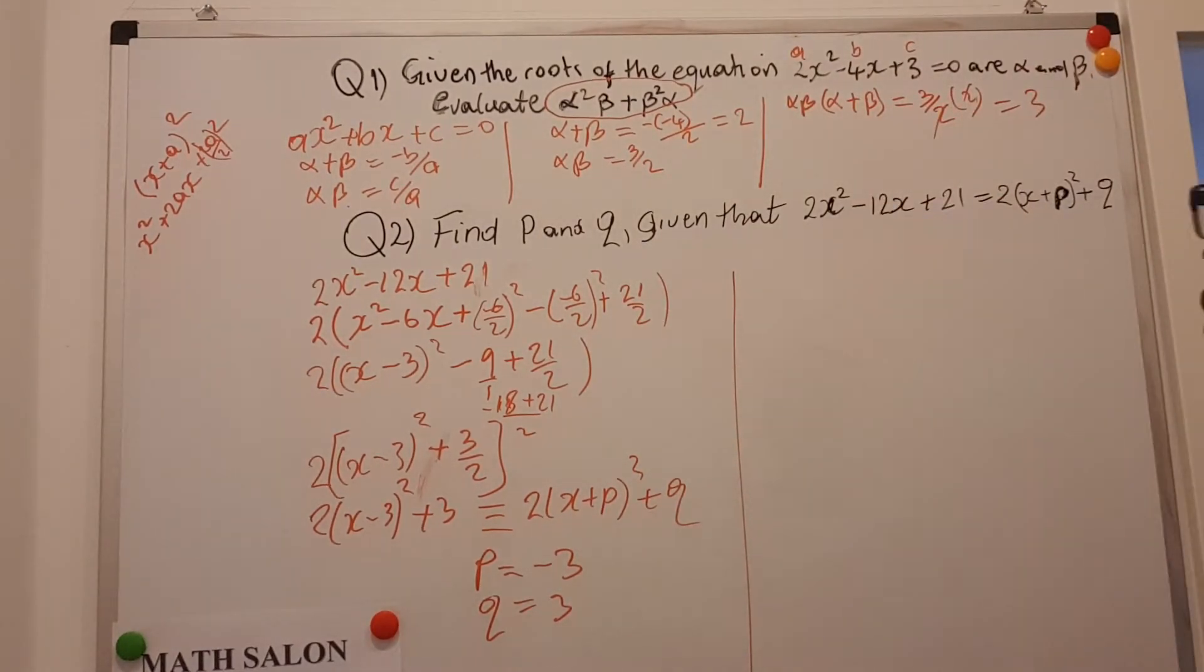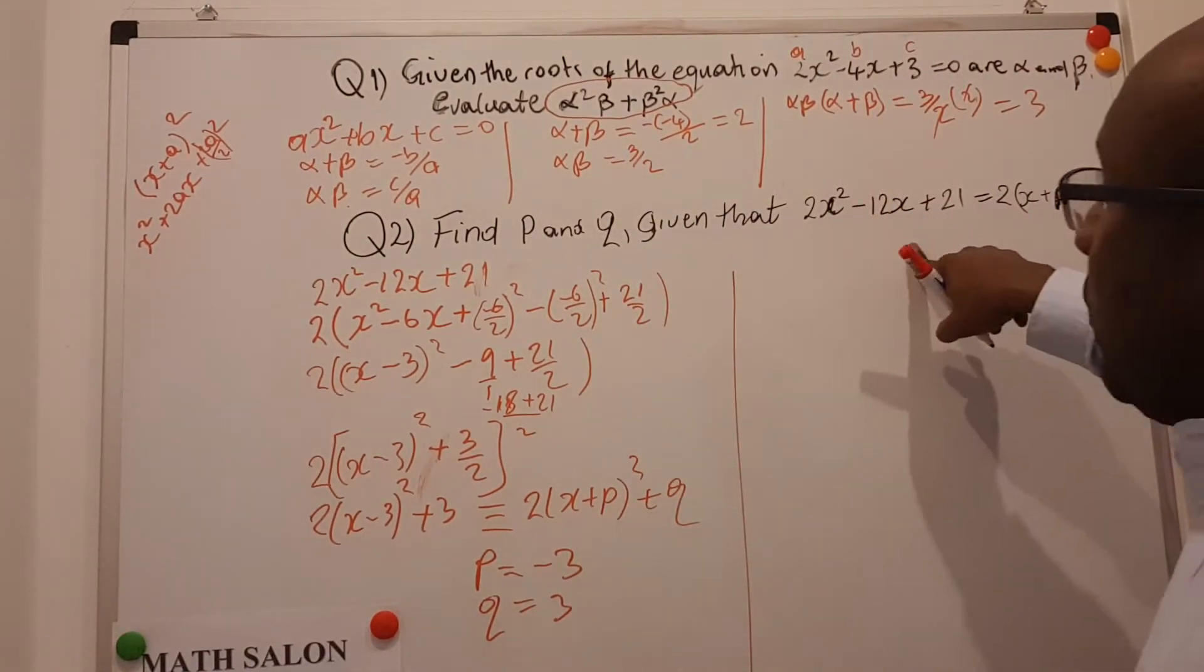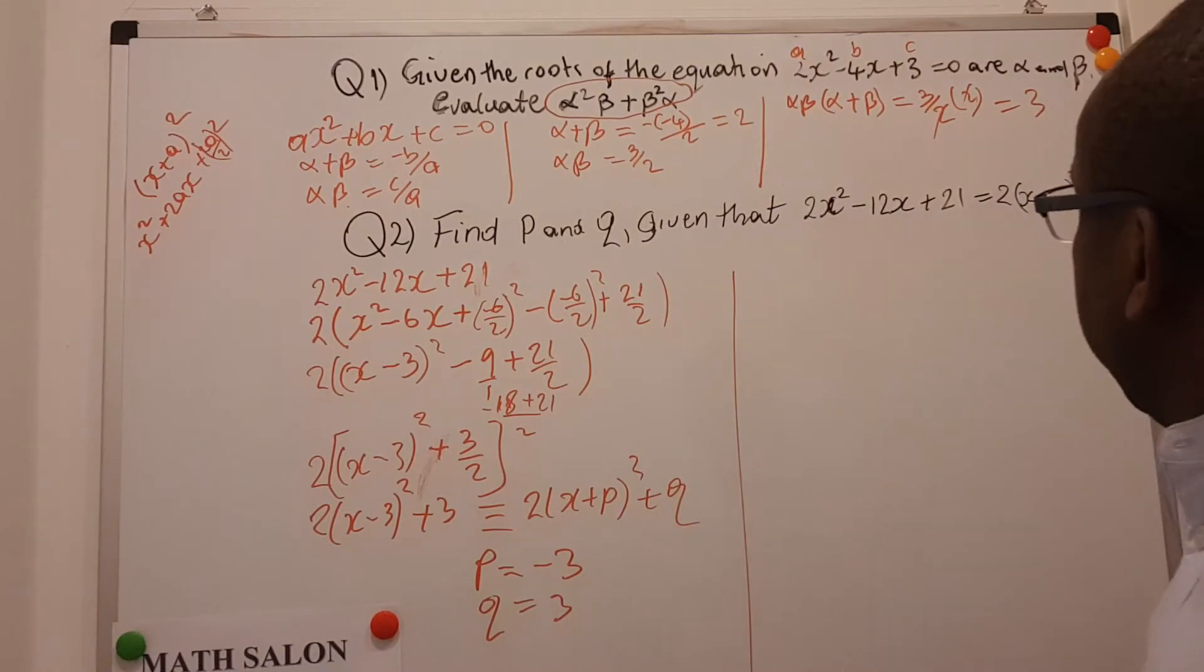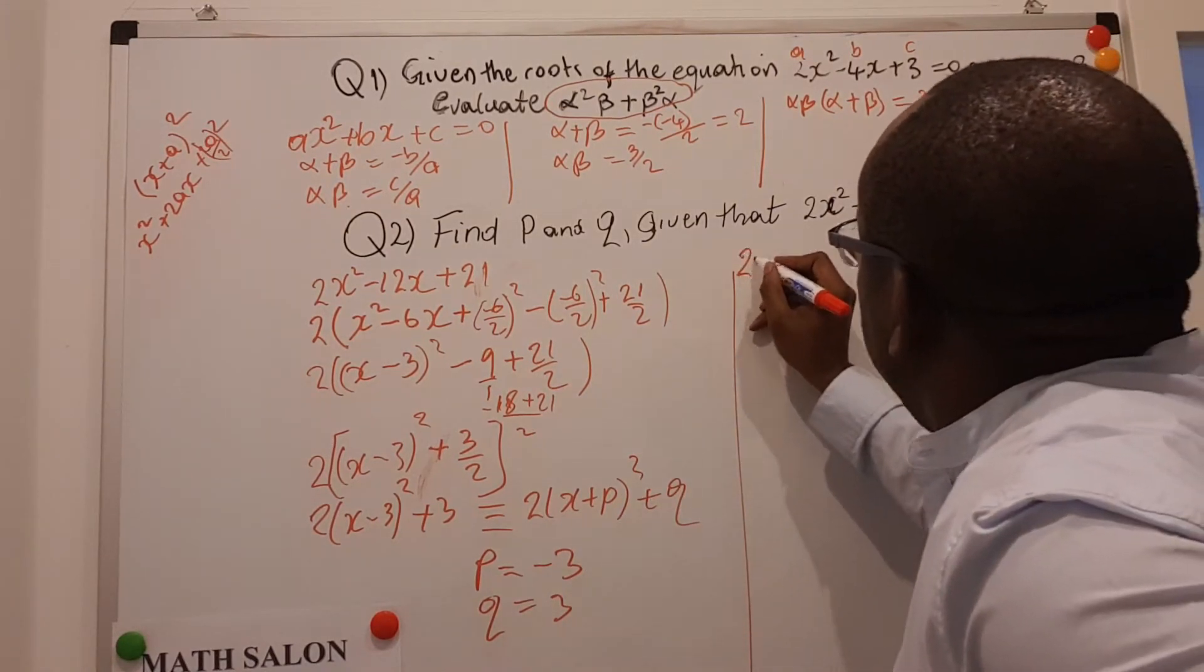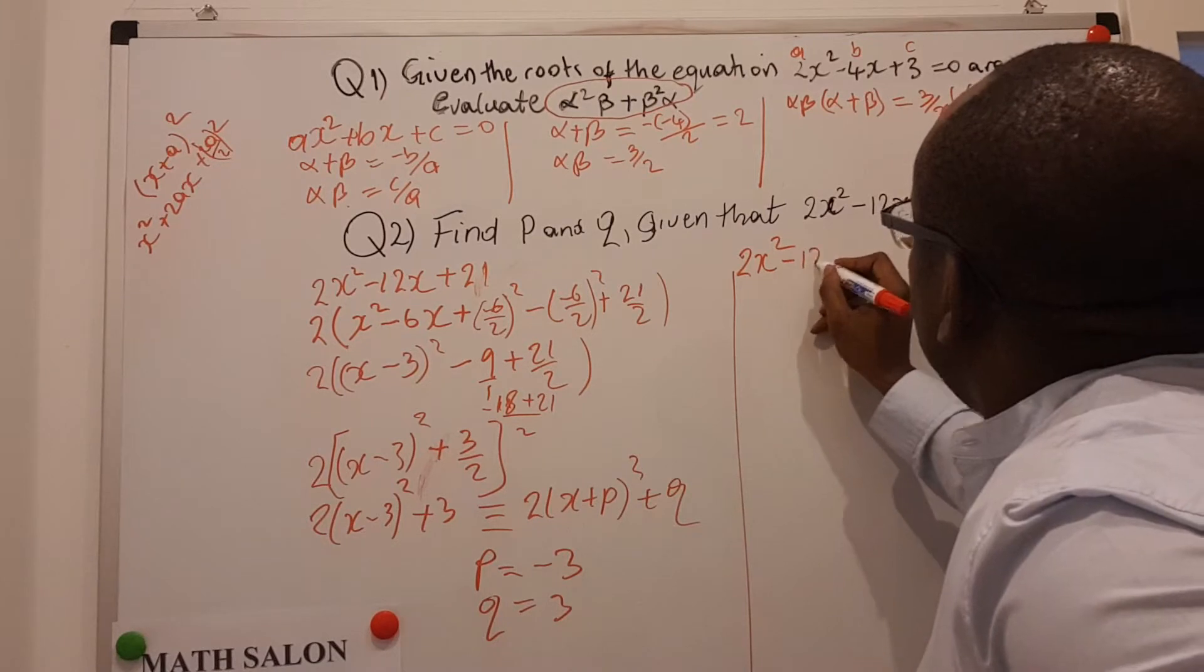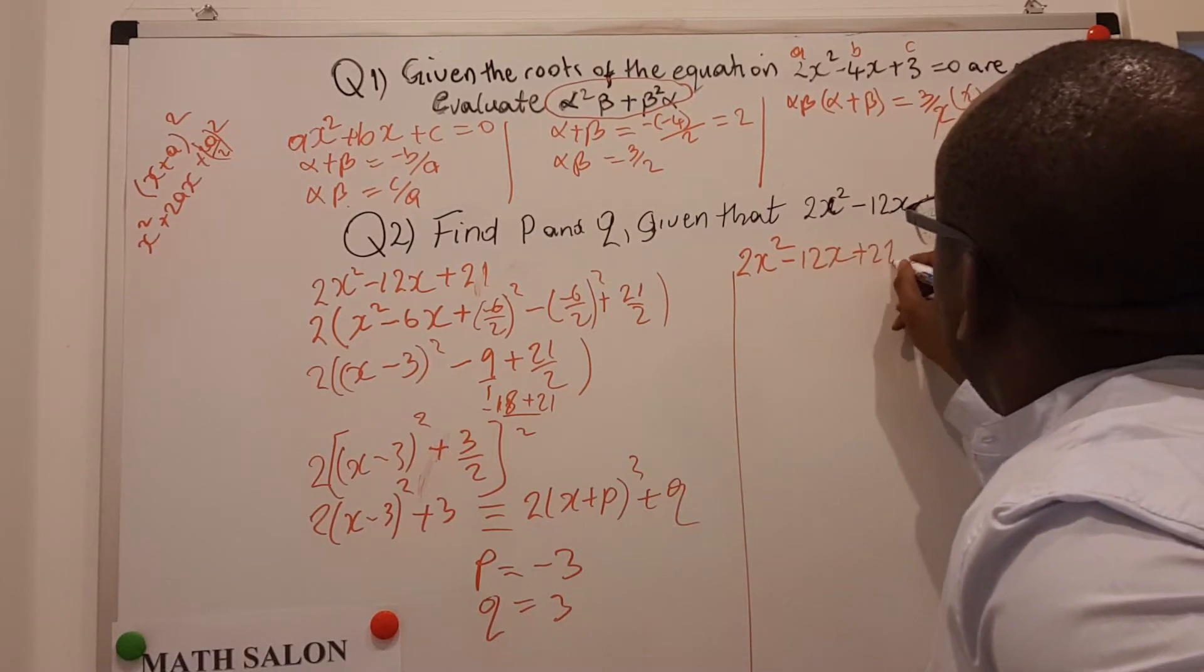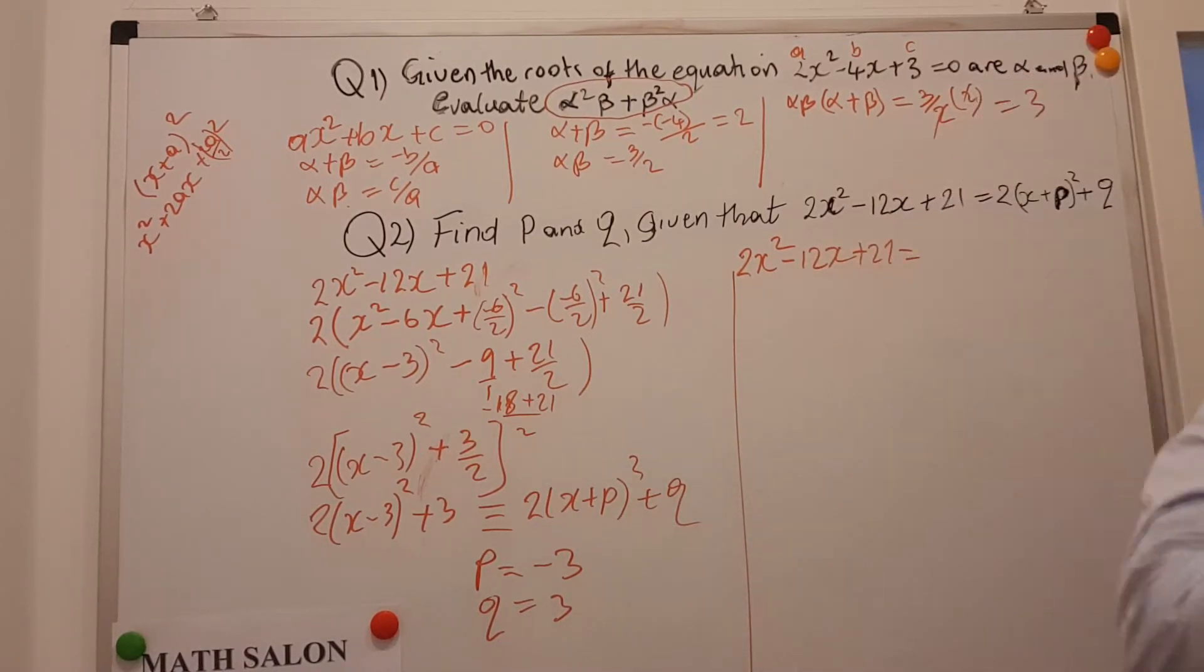We can try the second approach, which says that instead of working from the left hand side, we now work from the right hand side. So what I do is I just write 2x squared here, minus 12x plus 21 is equal to, I'm going to expand this.